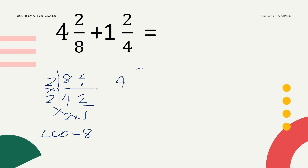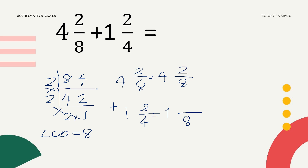Let us change 4 and 2/8 plus 1 and 2/4 using LCD 8. Copy the whole numbers 4 and 1, then copy the LCD 8. Since the given denominator is already 8, no need to change — just copy the numerator 2. For the other fraction: 8 divided by 4 is 2, times 2 equals 4. Add the numerators: 2 plus 4 equals 6 over 8. Add the whole numbers: 4 plus 1 equals 5, giving us 5 and 6/8.